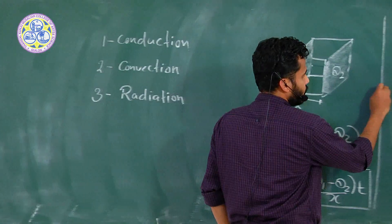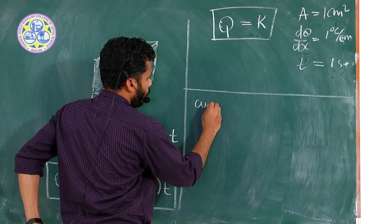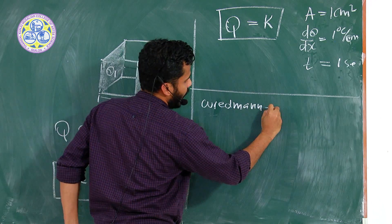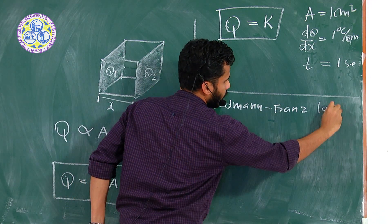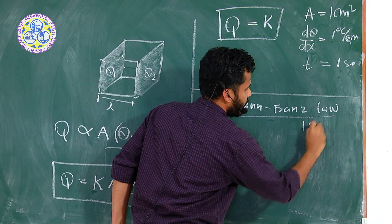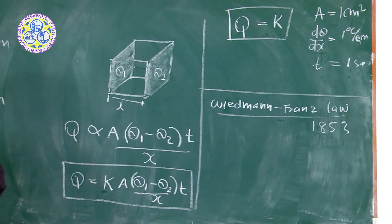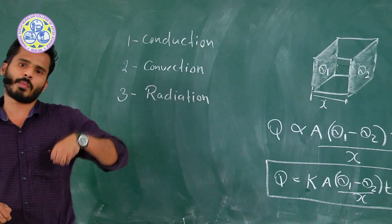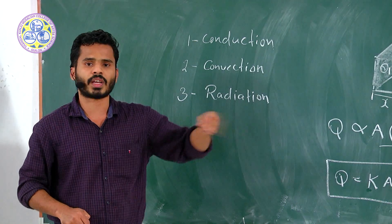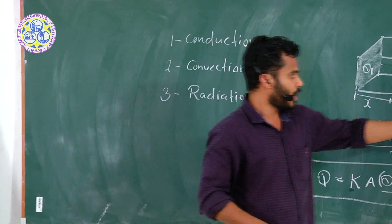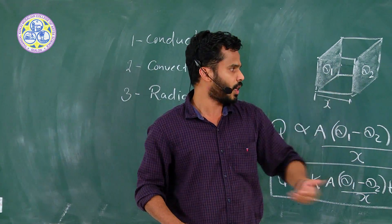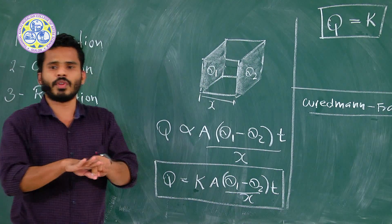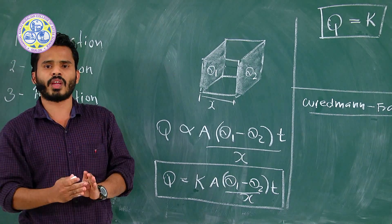There is a famous law called the Wiedemann-Franz law. In 1853, Wiedemann and Franz did many experiments on thermal conductivity and electrical conductivity. Just as with thermal conductivity, some materials are very good in electrical conductivity. What they found is that the ratio of thermal conductivity to the electrical conductivity of any metal is the same for a particular temperature.